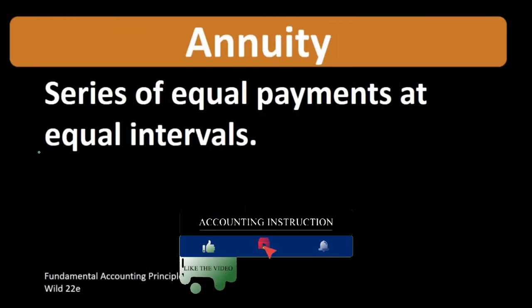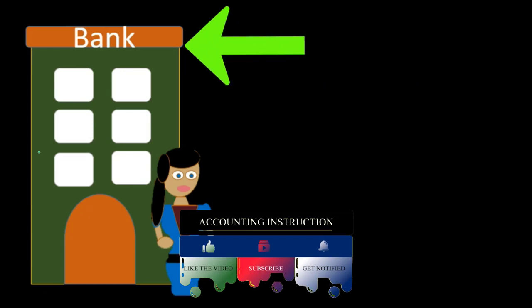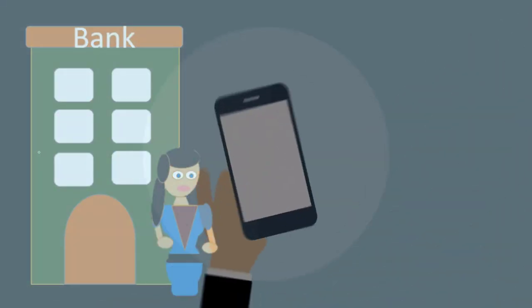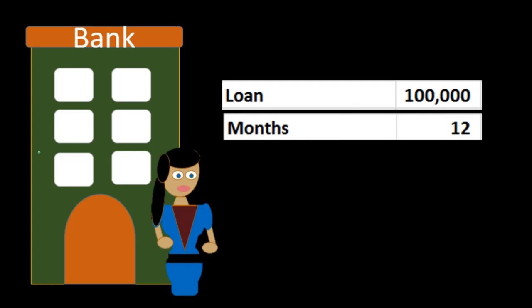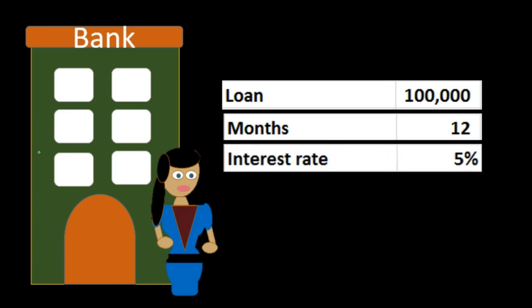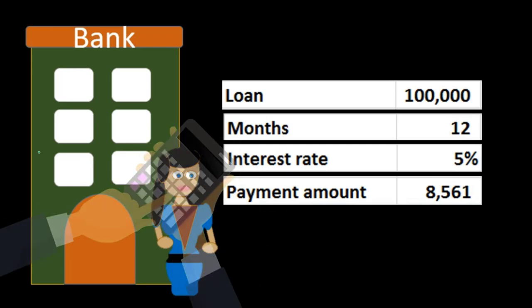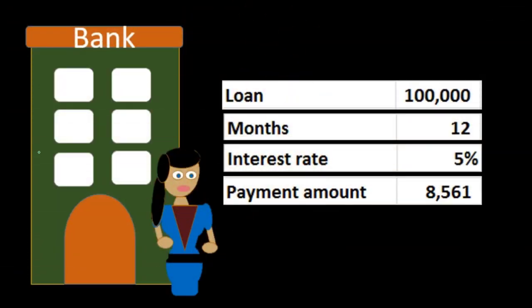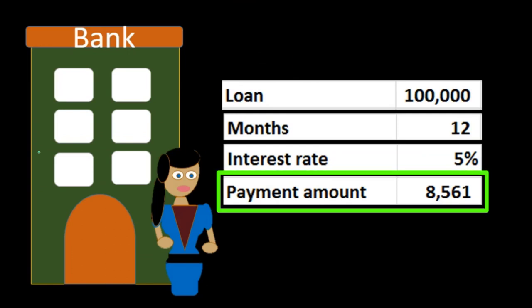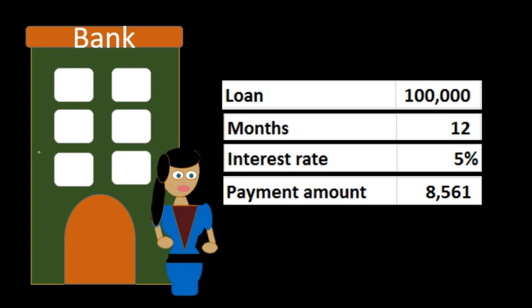Let's take a look at an example. We're going to assume we're getting a loan from the bank in a similar structure as a mortgage, where we have equal payments throughout the loan — some of those payments will be for interest, some for principal, but the payment amount will be the same each month. We're going to have a loan of $100,000, a 12-month loan, with an interest rate of 5%. The payment amount — which is typically calculated via a computer system, Excel, or a financial calculator — will be $8,561.